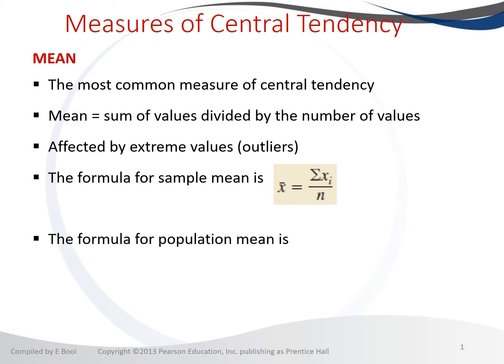For the population mean — which is the parameter — we use mu (μ), equal to the sum of all observations divided by how many there are. Both the sample and population formulas are the same: sum of all observations divided by count. The difference is that the sample mean is x-bar divided by lowercase n, while the population mean is mu divided by capital N.